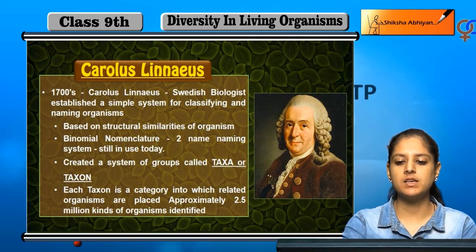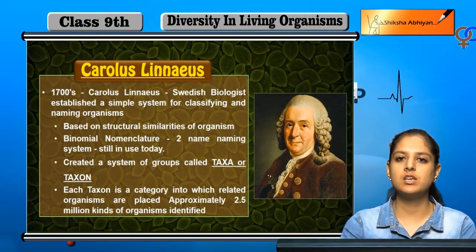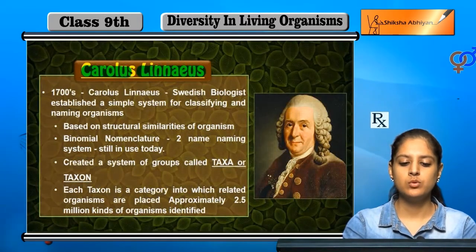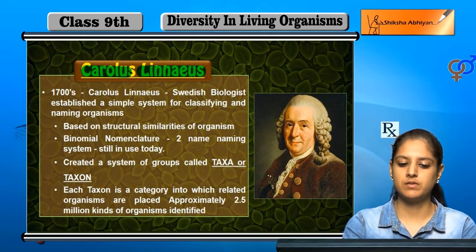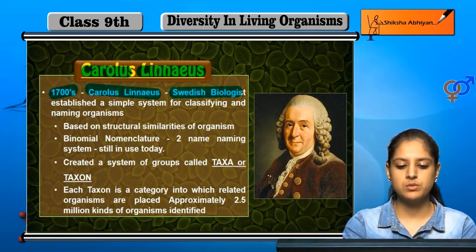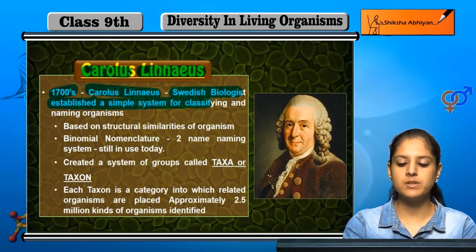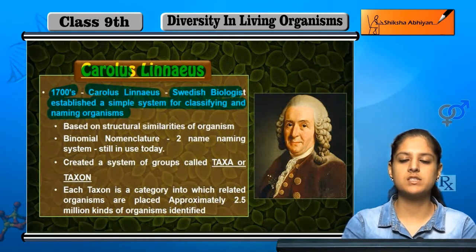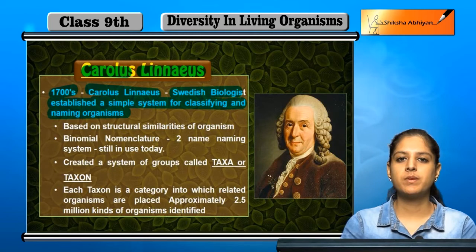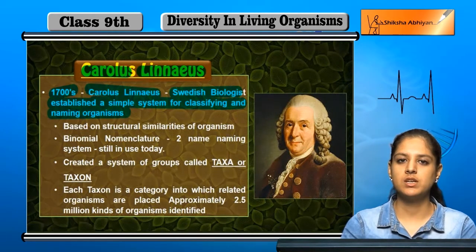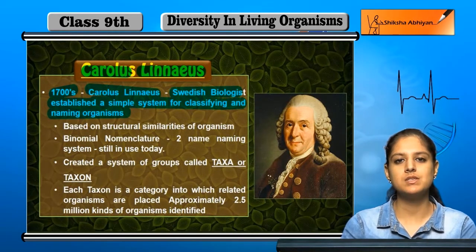Let's look at the classification initiative. Carolus Linnaeus, in the 1700s, initiated classification. He was a Swedish biologist who established a simple system for the classification and naming of organisms. When he classified organisms, he also addressed the naming of each organism and initiated this system.